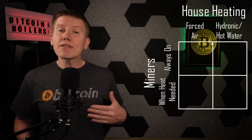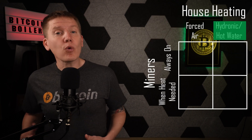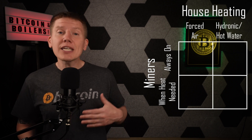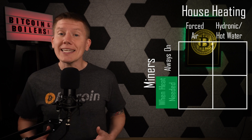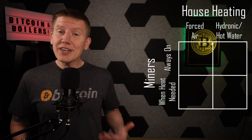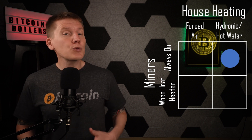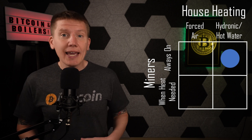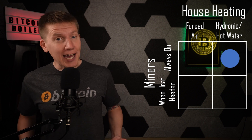In my first Home Heating with Bitcoin episode, I outlined the four different setups for heating your home with Bitcoin — using either forced air or hydronic or hot water heating, and either keeping your miners on all the time or only turning them on when heat is needed. In this episode, I'm going to cover homes with hydronic or hot water heating and keeping your miners on all the time.